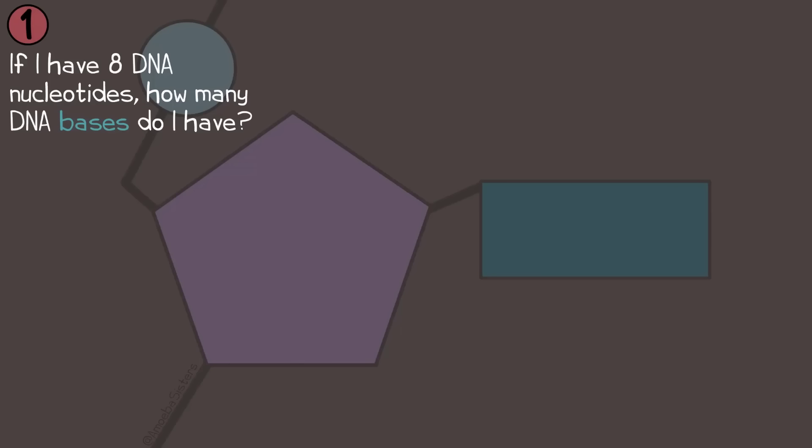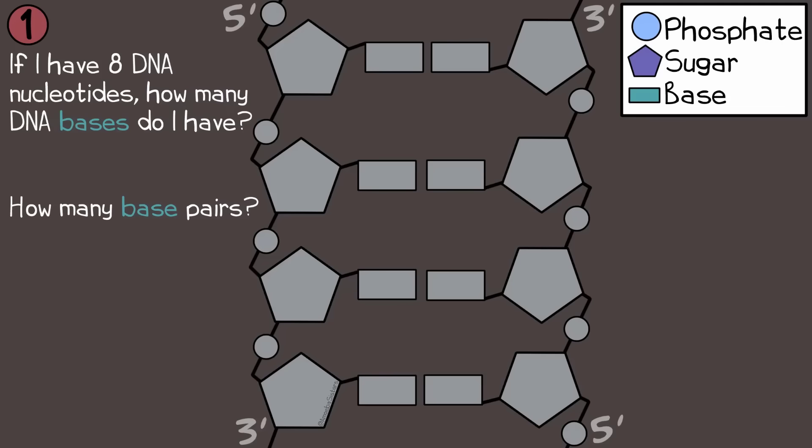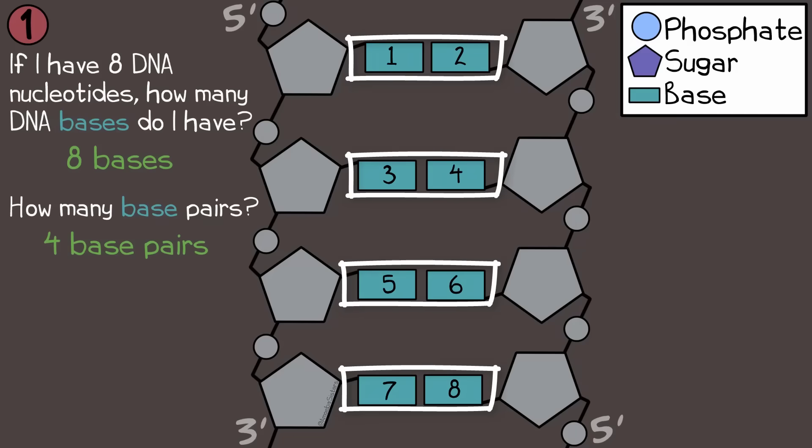Question 1. If I have 8 DNA nucleotides, how many DNA bases do I have? And also, how many base pairs? The answer. Each nucleotide, regardless of whether it's a DNA or RNA nucleotide, has a phosphate, sugar, and a base. So 8 DNA nucleotides would have 8 bases. DNA bases pair like this. And that's 4 DNA base pairs.